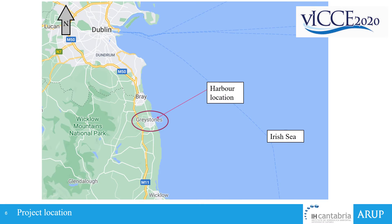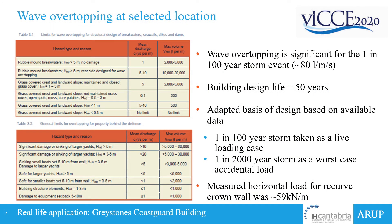To give you a better sense of the geography, Greystones is a small town south of Dublin with a harbour located directly on the Irish Sea. Based on the information from the design of this breakwater, we knew that the wave overtopping for the 1-in-100-year storm event was about 80 litres per second per metre as a mean discharge. Comparing this to the values in the Eurotop manual, you can see that this greatly exceeds the recommended tolerances, and therefore there's a significant problem with wave overtopping and no way to quantify the damage it could cause.